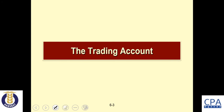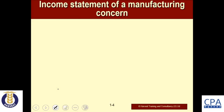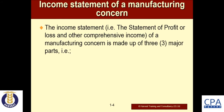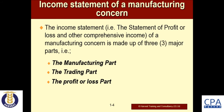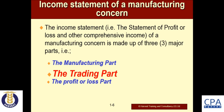The trading account is part of the income statement of the manufacturing concern. The income statement, or statement of profit or loss, of a manufacturing concern is made up of three major parts: we have the manufacturing part, then we have the trading part, and then the profit or loss part. In this discussion we are going to look at the elements and the format of the trading part.